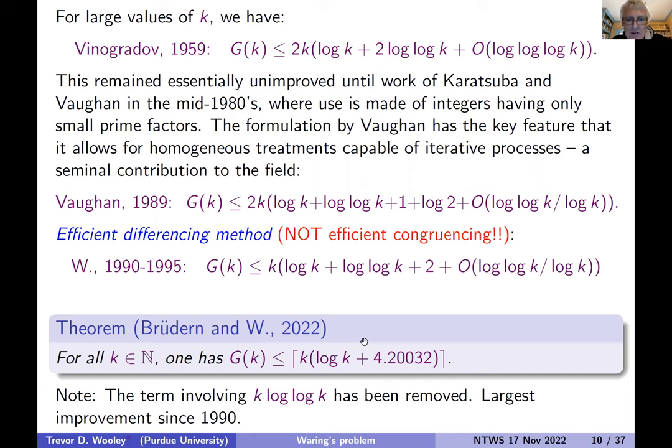So here's the big reveal of the talk. We've got an improvement now on this bound. So the constant in front of the k log k hasn't changed, but the log log k term has disappeared. And all this big O stuff, that's disappeared as well. So there's an explicit bound, which is valid for all natural numbers k.